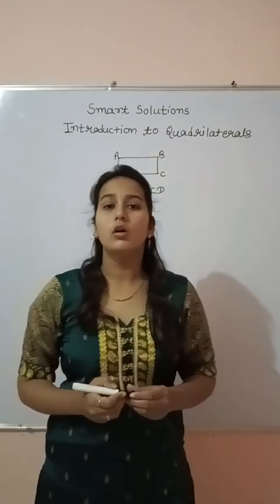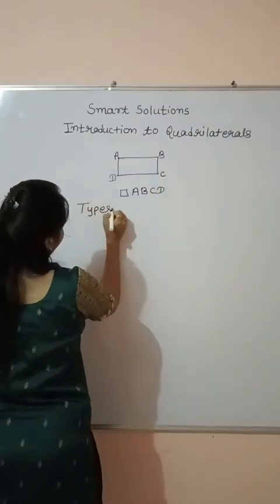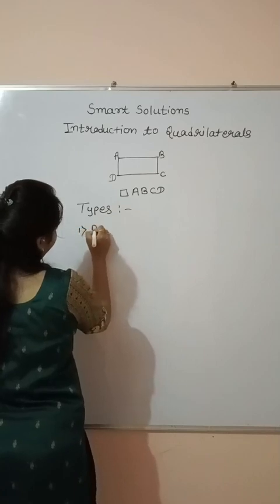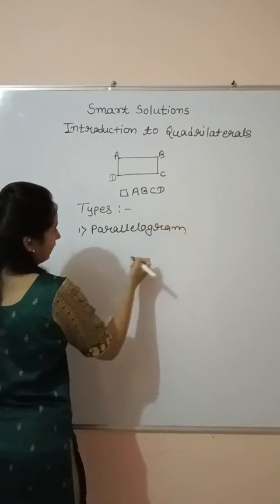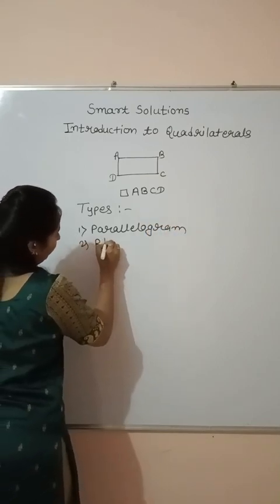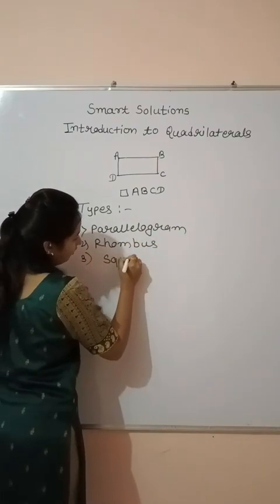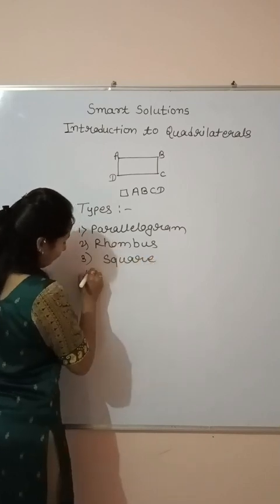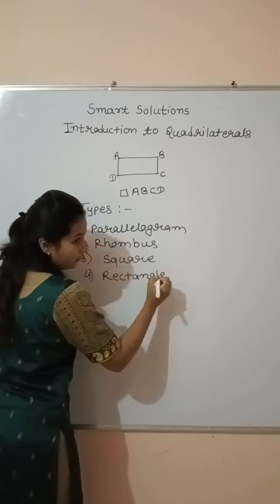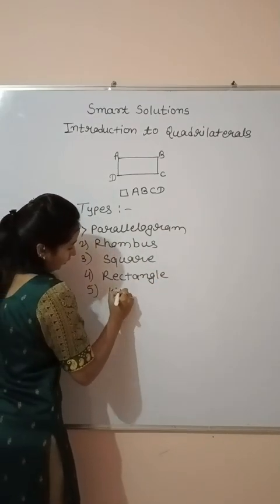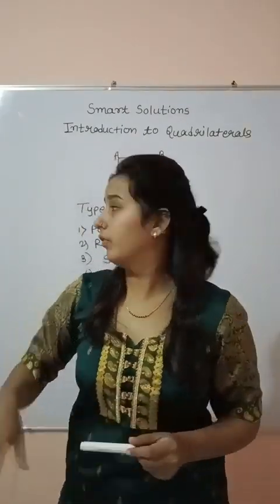So there are different types of quadrilaterals. The first is the parallelogram, the second one is the rhombus, the third one is the square, the fourth one is the rectangle, and the fifth one is the kite. These are the types of quadrilaterals. We will learn each type one by one with their examples.